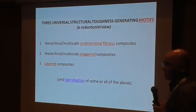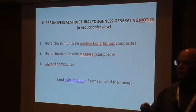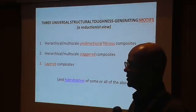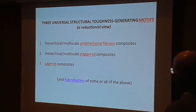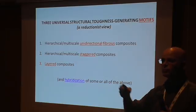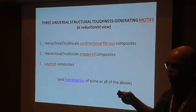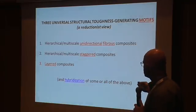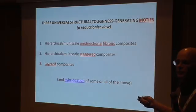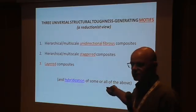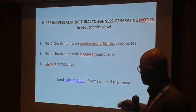In terms of motifs, there are three basic types you find in nature that generate toughness. The first is the creation of unidirectional fiber composites in nature — it's almost everywhere. The second is the staggered kind of composite materials. And of course the third is layered composites, which we will talk about.